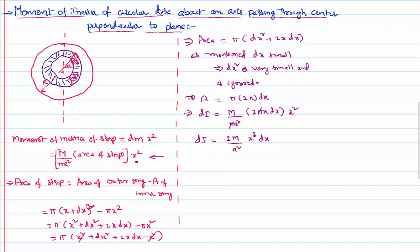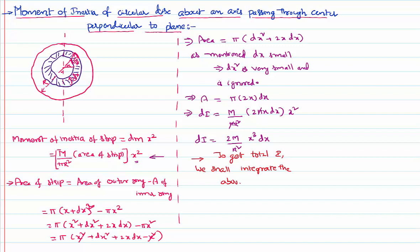There are so many strips like this. I have to calculate the moment of inertia of each strip, and to get the total moment of inertia I have to add all of them together. That is done using the mathematical process called integration. Integrating both sides: integral of dI equals integral of 2M over R squared times x cubed dx. The integral of dI is I. 2M over R squared being constant can be taken outside the integration. The integral is of x cubed dx, where x varies from 0 to R — the center to the outer periphery. These are called the limits of integration.